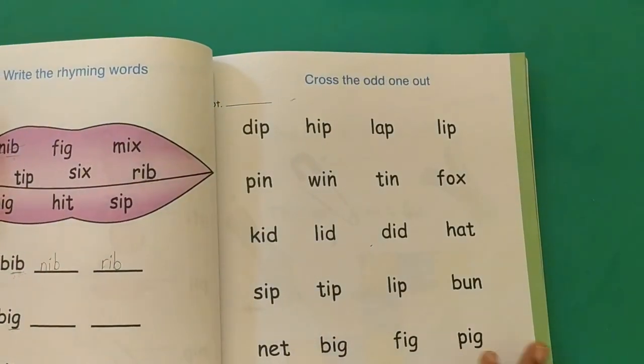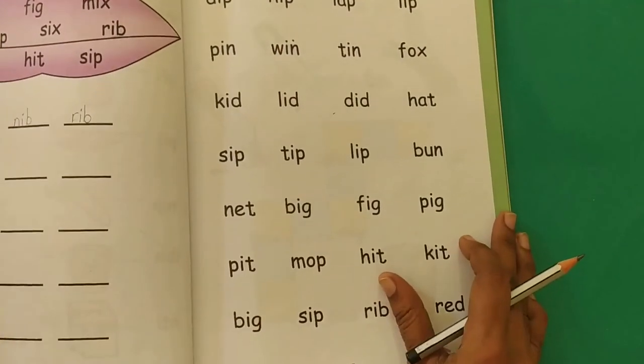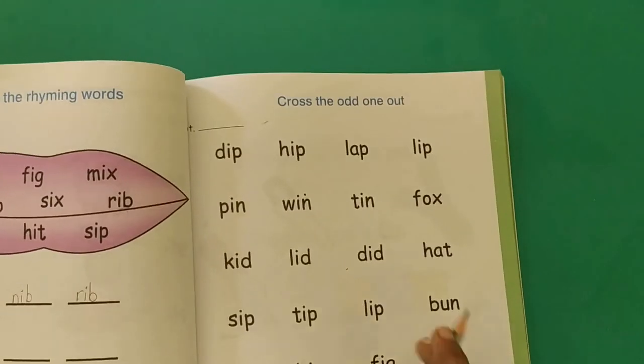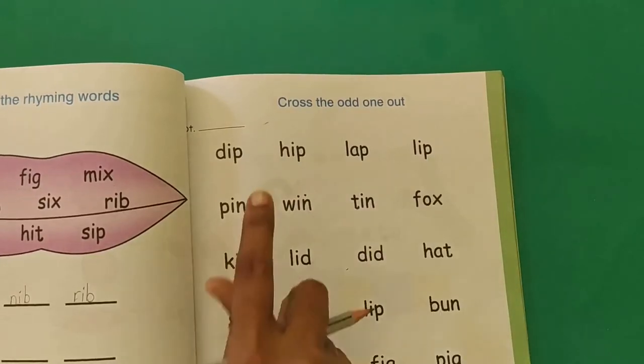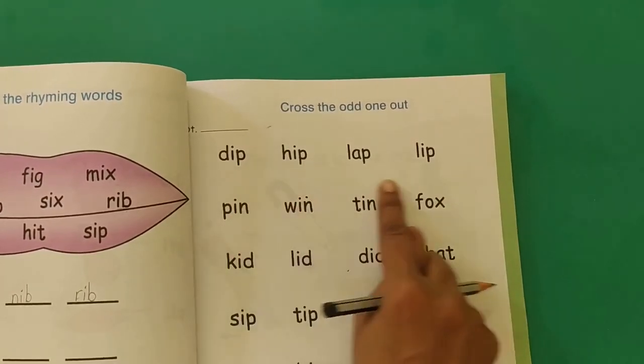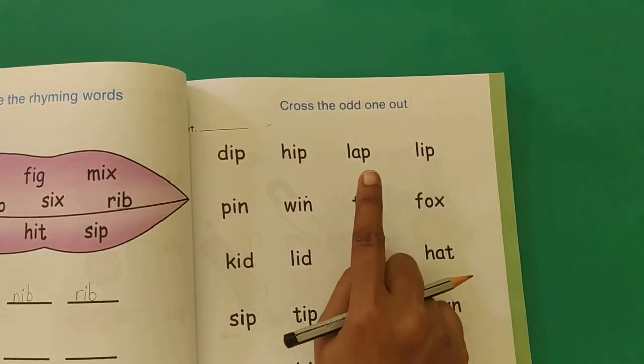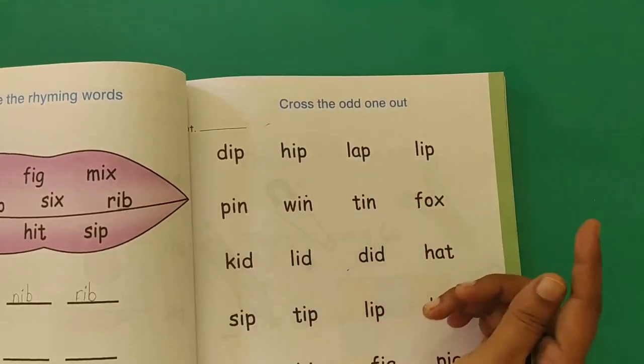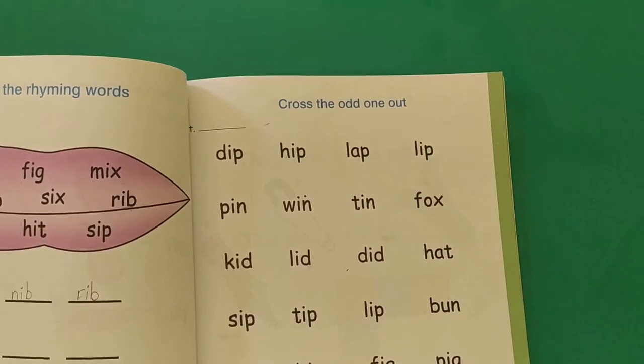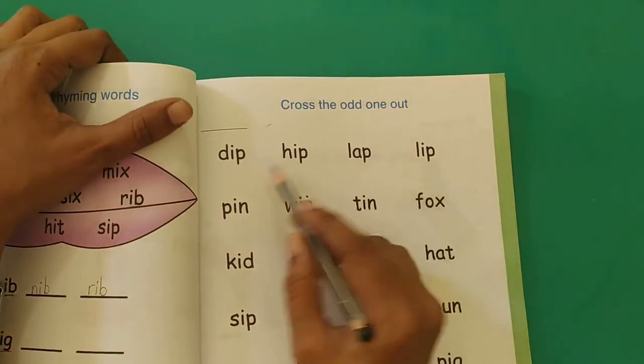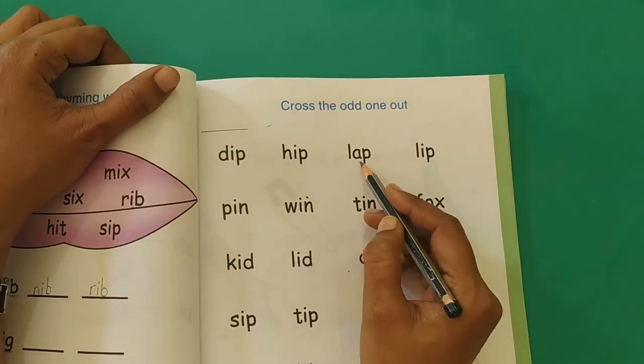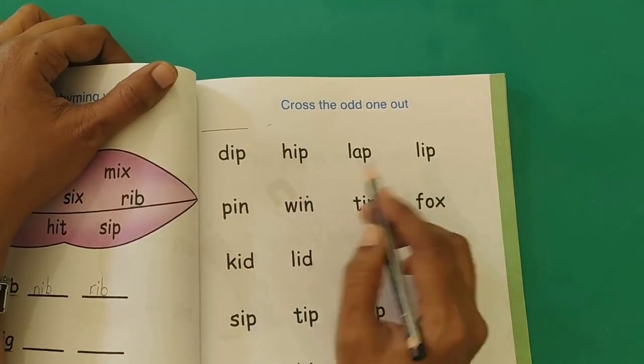Next we will move to the next worksheet on page number 45. Cross the odd one out. So in every row, every line you have four words. You have to cross the odd one out. Now we are doing the activity for vowel I. So which words do not have vowel I in them? You have to cross it out.